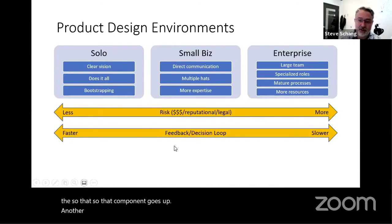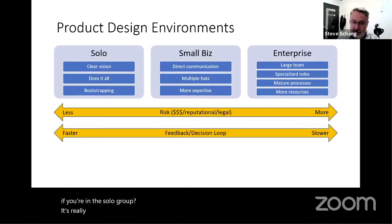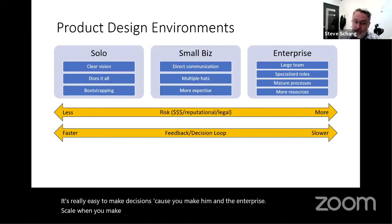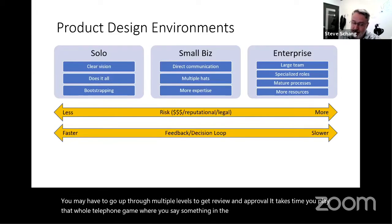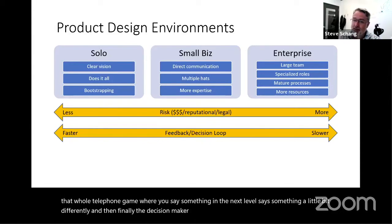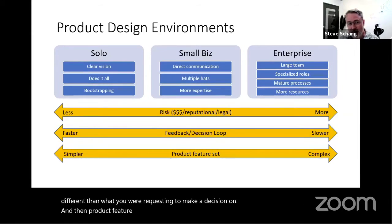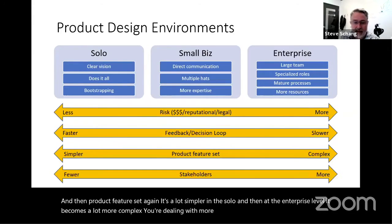Another factor is the feedback and decision loop. If you're a solo group, it's easy to make decisions. At the enterprise scale, you may have to go up through multiple levels to get review and approval — it takes time. You play that telephone game where you say something, the next level says it a little differently, and the final decision maker hears something totally different. And then product feature set: simpler at the solo level, much more complex at enterprise with more features and stakeholders.